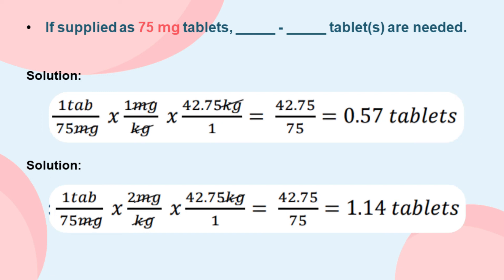How about if supplied as 75-milligram tablets? How many tablets do you think are needed? Repeat the process: cancel out terms, multiply, and divide. Again, substitute the given for the second dose, cancel out terms, multiply, and divide to get the answer.